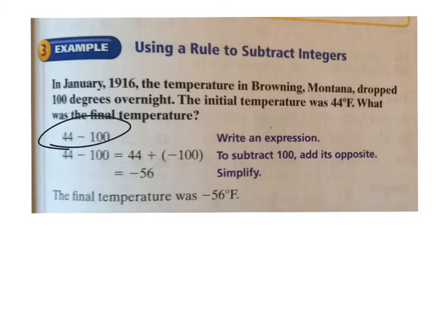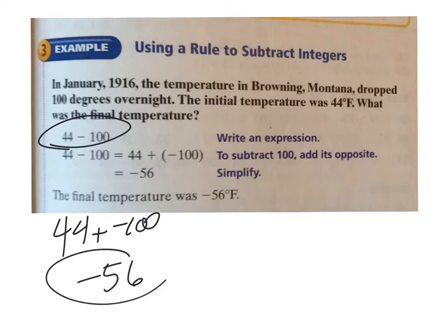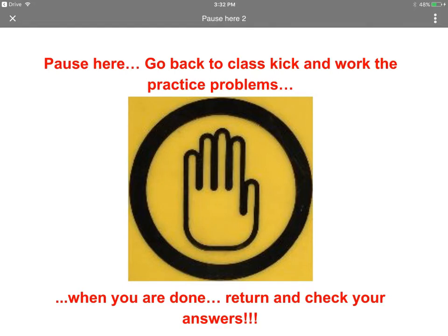These guys have different signs, right? So we're really going to subtract. You can think about it as 44 plus a negative 100, so you can subtract. 100 minus 44 is 56. If you don't believe me you can work that out. There are more negatives so it becomes negative 56. Yeah, the dog got frozen to the ground. Hopefully you didn't leave your dog out. Pause here, go into ClassKick, work a couple I have for you.